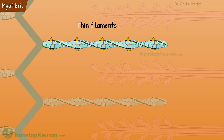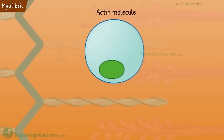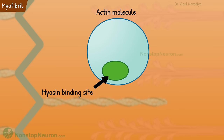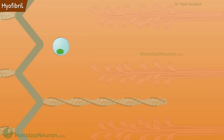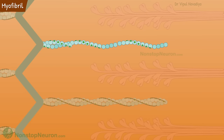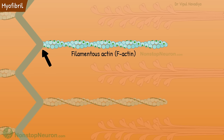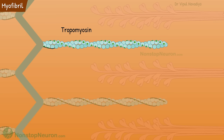Now let's have a closer look at thin filaments. They consist of actin, tropomyosin, and troponin. This is an actin molecule — it has a myosin binding site. Many such actin molecules polymerize to form a double-stranded helix called filamentous actin or F-actin. It is attached to the Z-disc at one end and it makes the backbone of the thin filament. Then we have tropomyosin. Two thread-like tropomyosin molecules lie alongside the actin helix and physically cover the binding site for myosin.